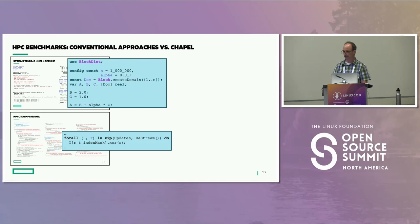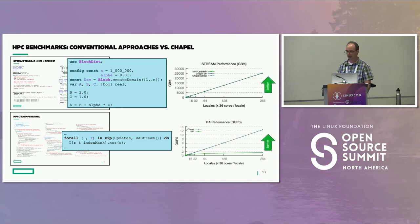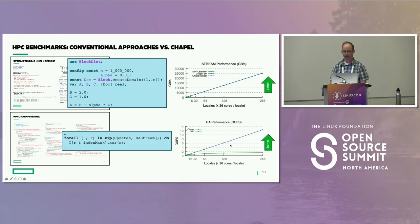The reasons the Chapel code is more compact are twofold: we're a modern language that has learned from modern languages, and we've built parallelism and locality into the language as first-class features. These are scalability graphs — higher is better, the x-axis is number of compute nodes with 36 cores per locale, so up to about 9,000 cores. For the first benchmark, Chapel scales neck-and-neck with the reference MPI implementation; for the second, we actually outperform the reference. Not only are the Chapel codes compact — they perform quite well.